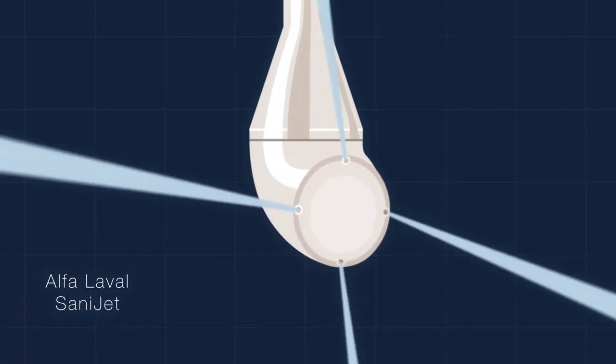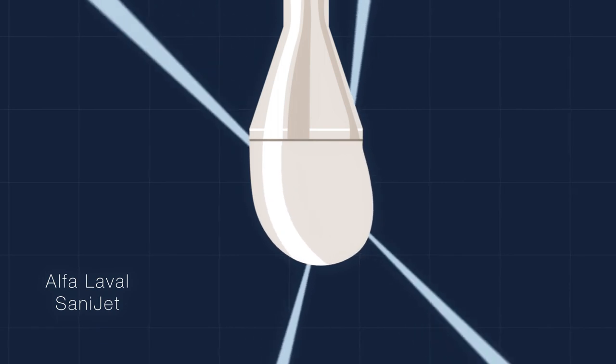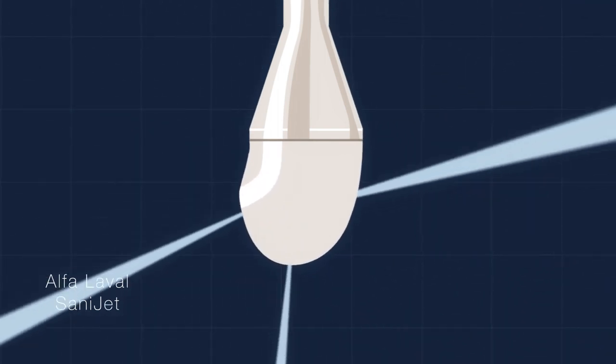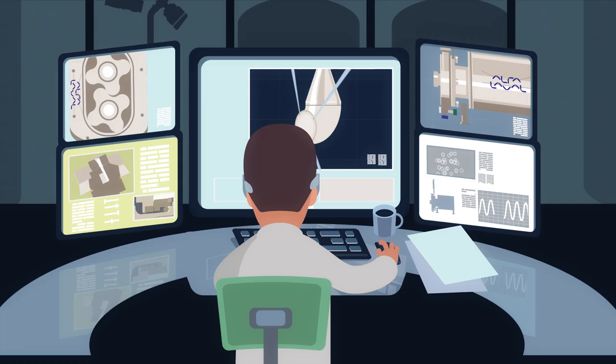Using the Alfa Laval SaniJet with its strong impact jets covering the entire interior tank surface, we ensure perfect cleaning action, even in the most difficult clean areas.